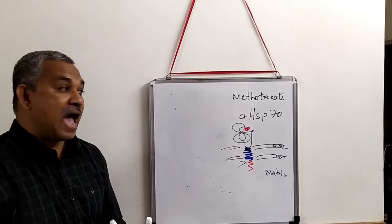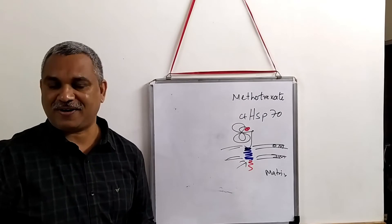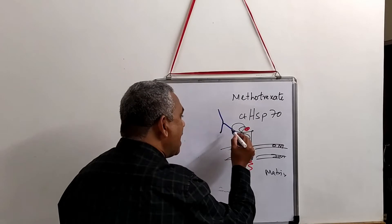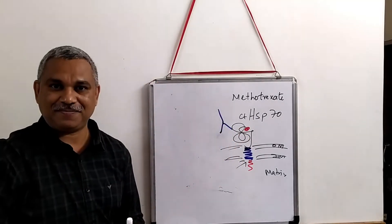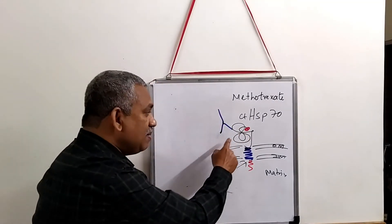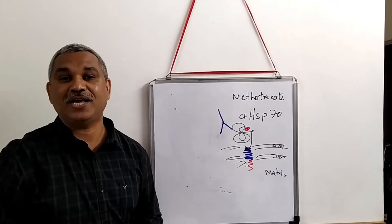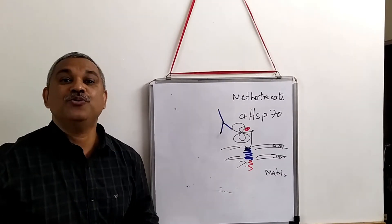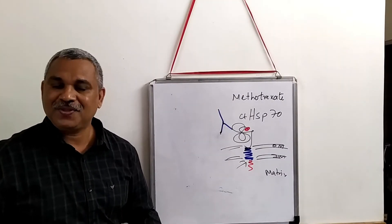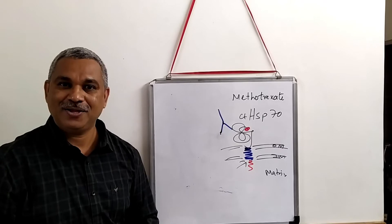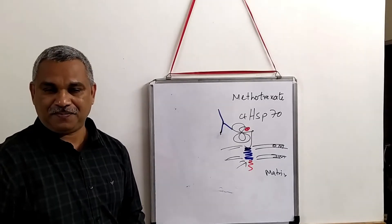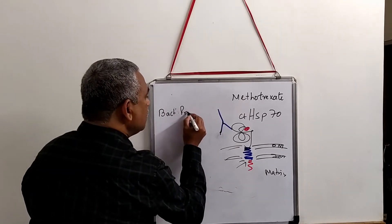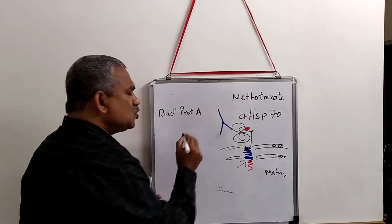They created antibodies against this DHFR. Antibodies were added — you know that the antibody will bind to the dihydrofolate reductase. Once the antibody is bound, you need to detect the antibody. So there is a bacterial protein — called bacterial protein A — a non-specific protein that will bind to antibodies.